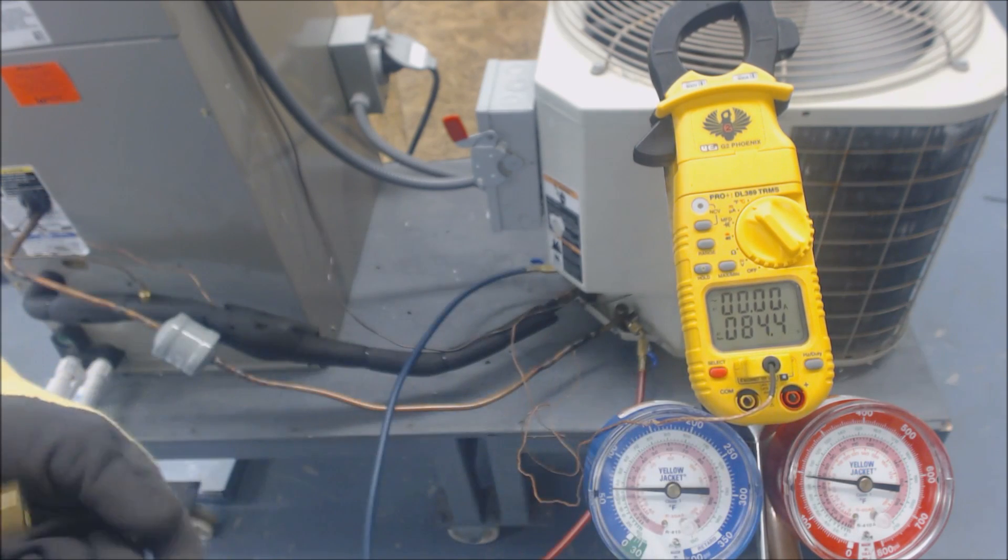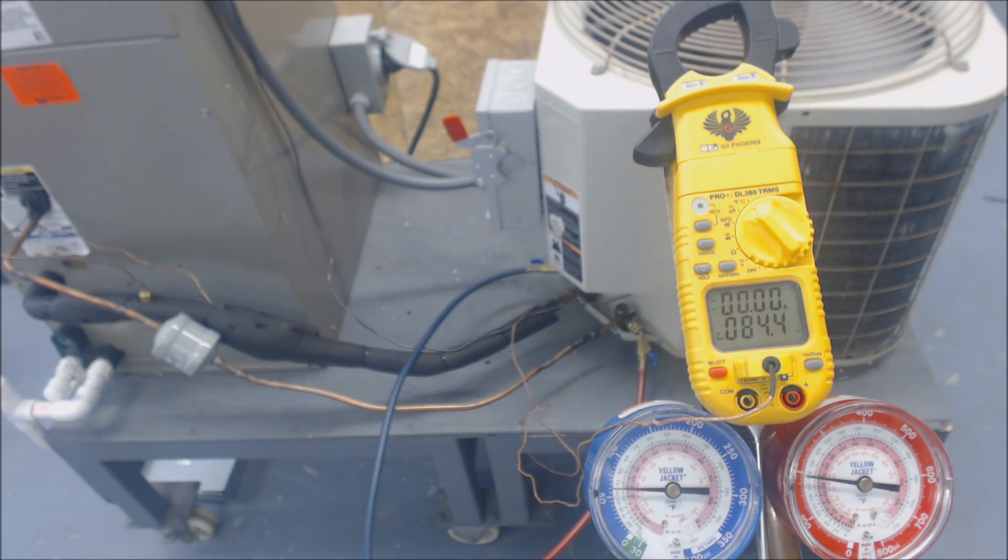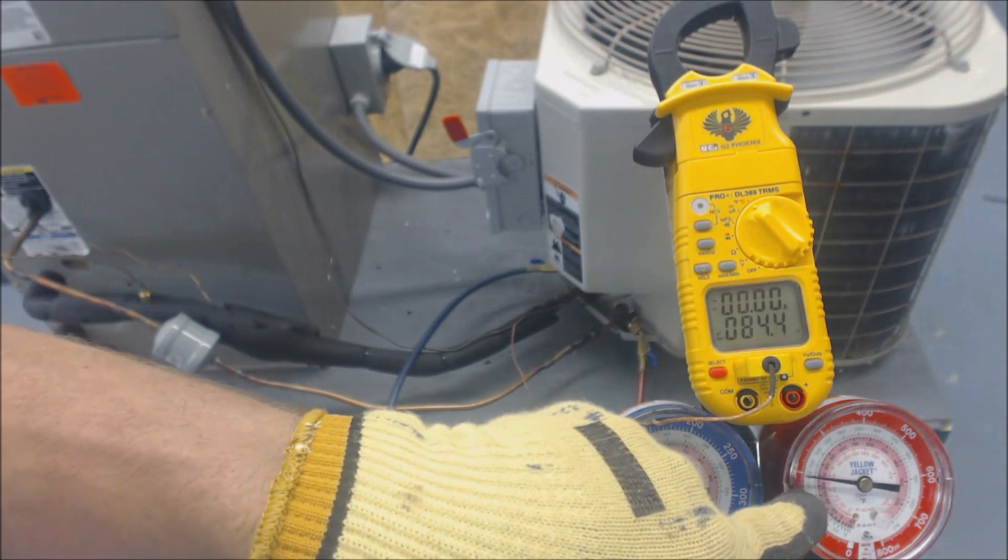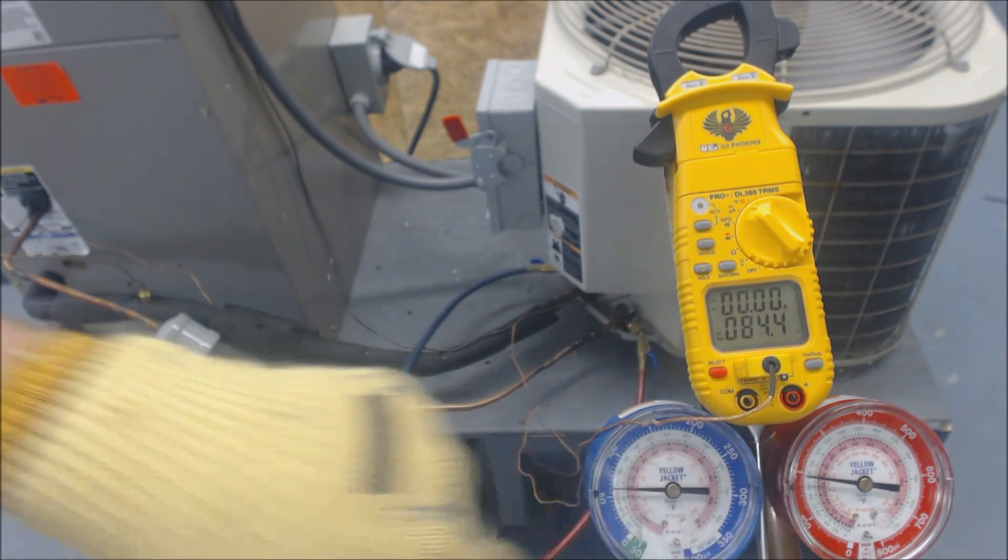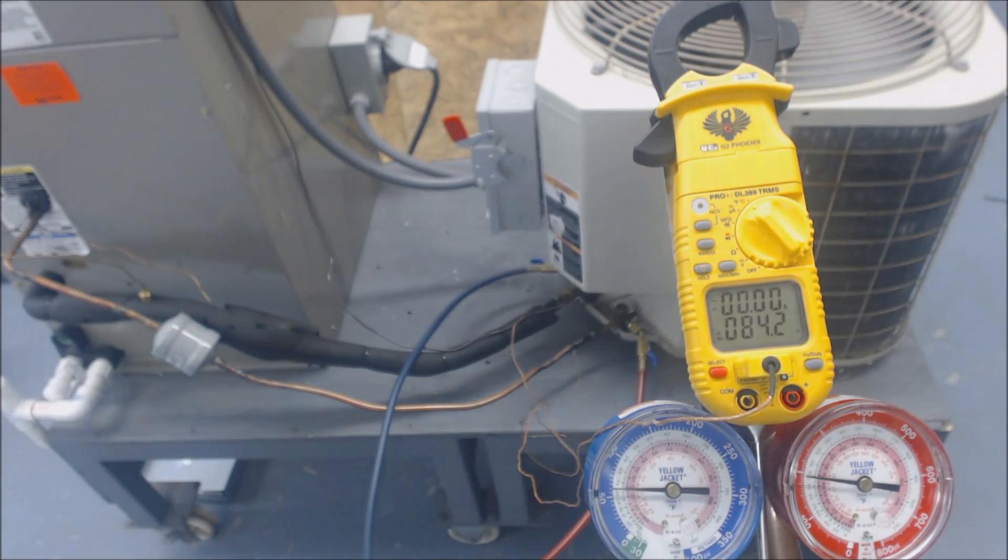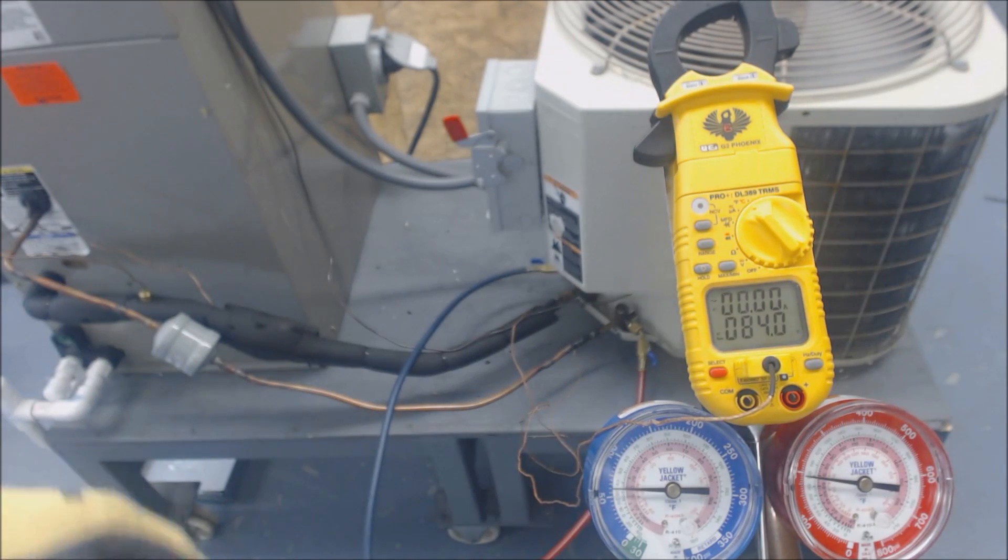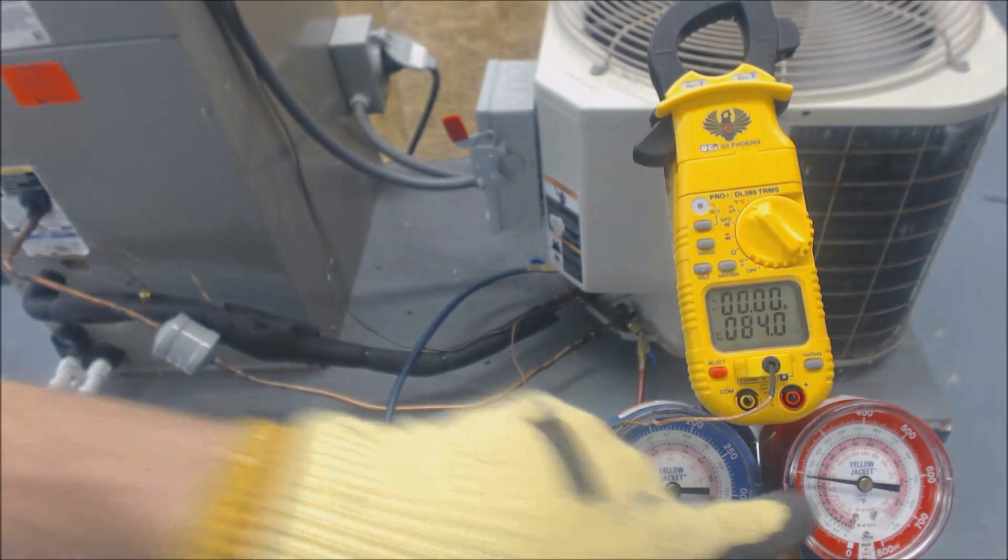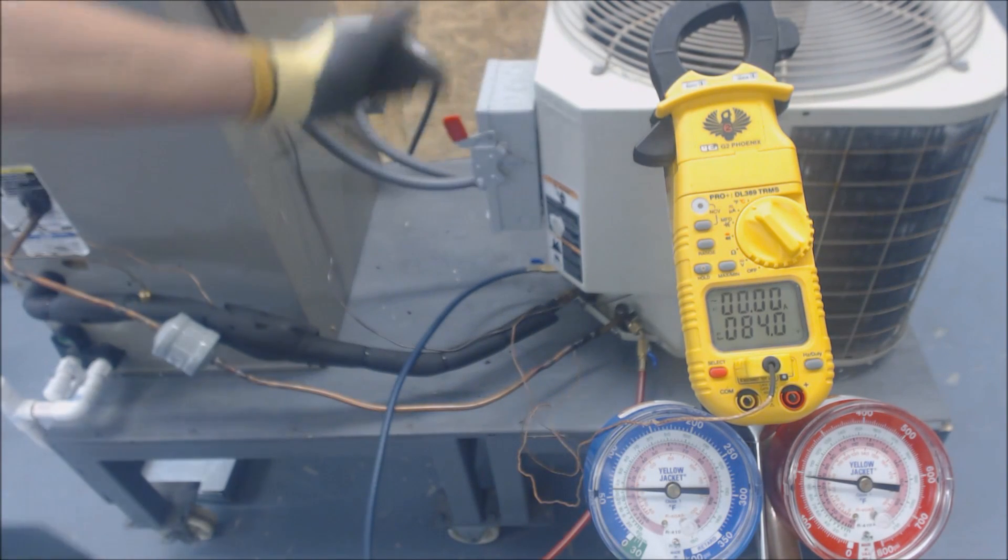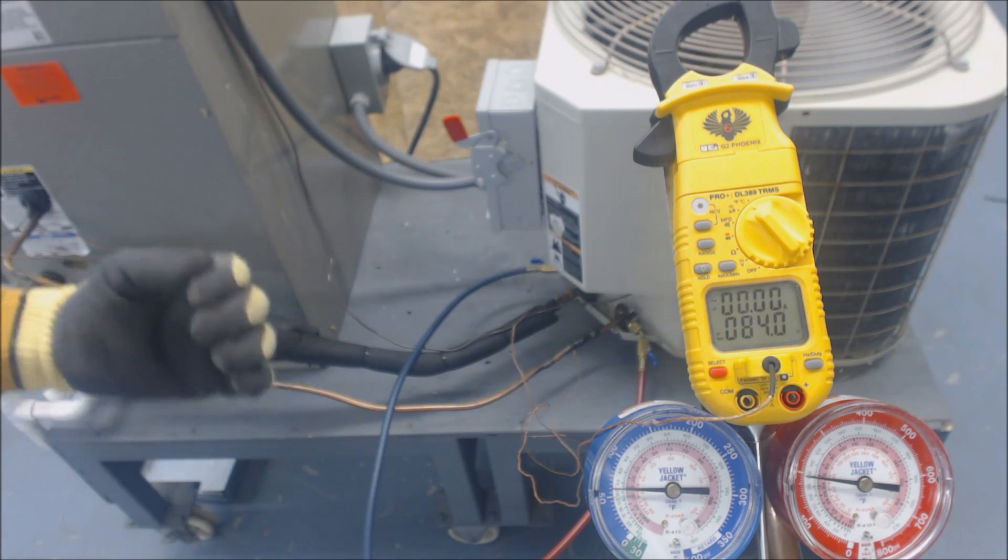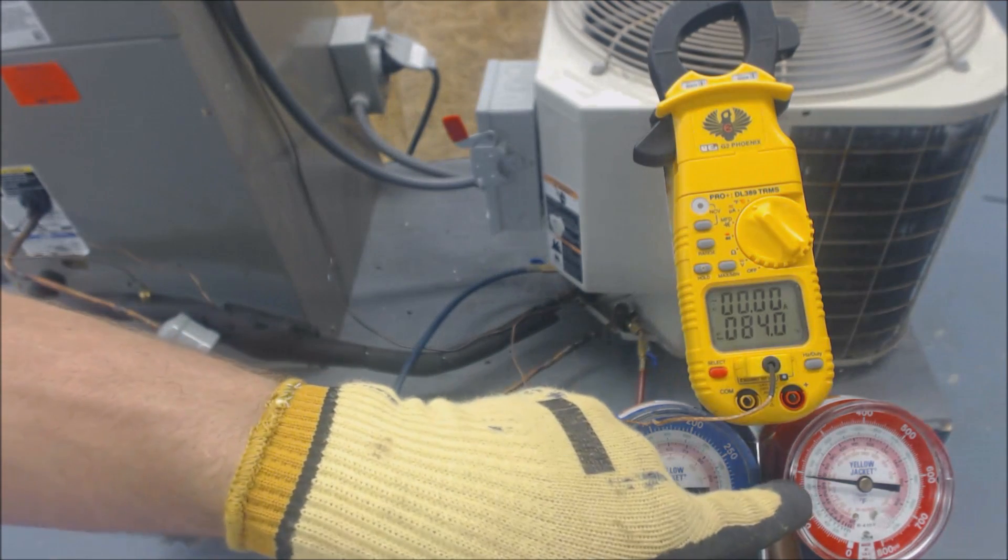We know we have a TXV, so we're going to check the charge in subcooling. We presently have about 195 PSI. If you follow that over, this unit is R22. On the rating plate it says 15 degrees of subcooling is our target subcooling.